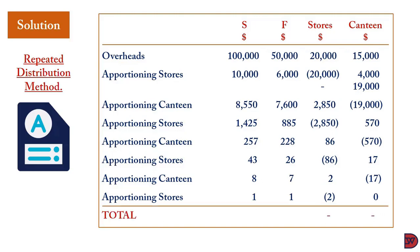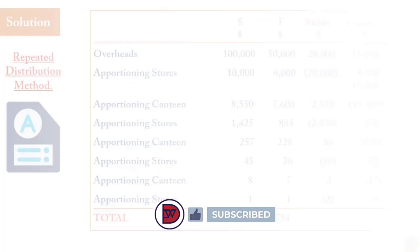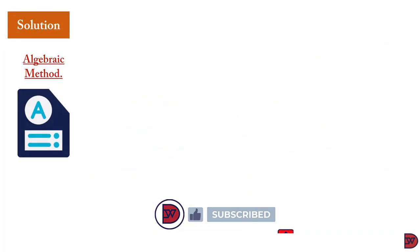Summing all overhead for the production departments, the final totals from the tabular method are $120,284 for sewing and $64,754 for finishing.